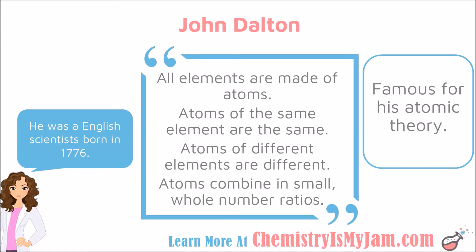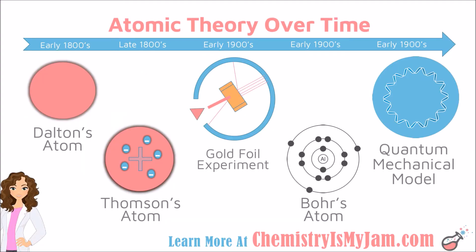If you consider that these observations were made in the early 1800s with very limited technology, John Dalton did pretty well. We still agree that all elements are made up of atoms. For atoms of the same element being the same, I'll give him a 'sort of,' because now we understand the concept of isotopes. I do agree that atoms of different elements are different and that atoms combine in small whole number ratios. Dalton's understanding of the atom was a spherical mass — he really didn't understand what was going on inside of it.